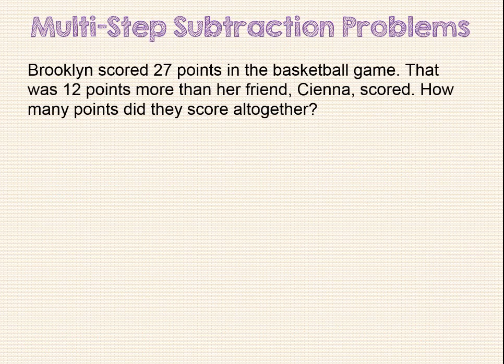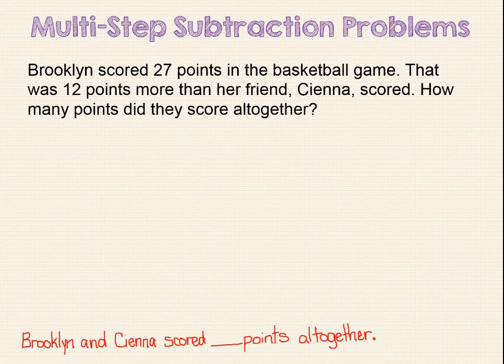This is our last problem. Brooklyn scored 27 points in the basketball game. That was 12 points more than her friend Sienna scored. How many points did they score altogether? Since we need to find out how many points the girls scored altogether, our sentence statement can be: Brooklyn and Sienna scored blank points altogether.